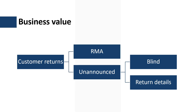In unannounced returns, the customer might know the return details of the sales orders they are returning, or it could be a blind return in situations where the customer doesn't know the return details, like the original sales order or the shipment number.